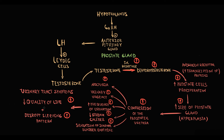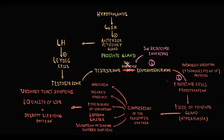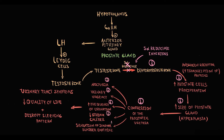The enzyme responsible for production of dihydrotestosterone is 5-alpha reductase. By blocking 5-alpha reductase, we can decrease the conversion of testosterone into dihydrotestosterone. If the production of dihydrotestosterone decreases, then proliferation of prostate cells decreases, thereby the size of the prostate gland will decrease. With decreasing size, compression of the urethra decreases, thereby the severity of symptoms will decrease.